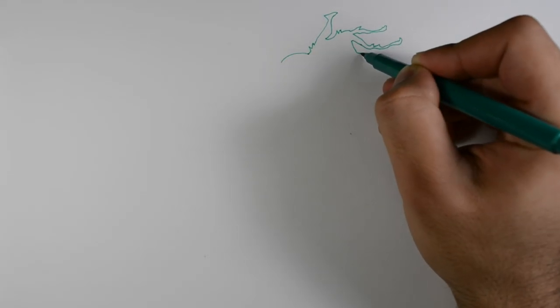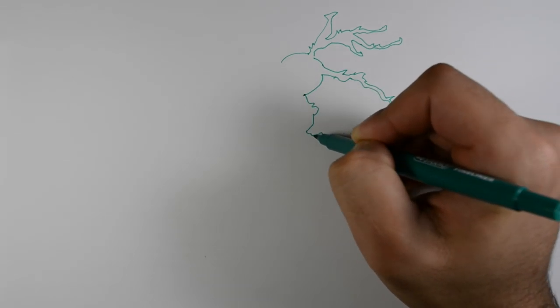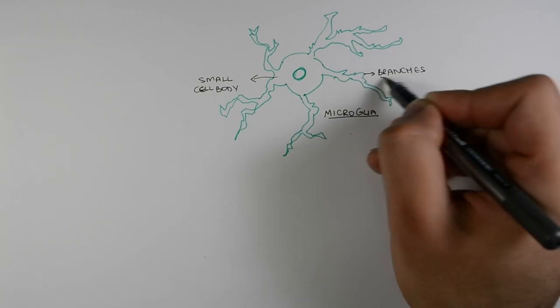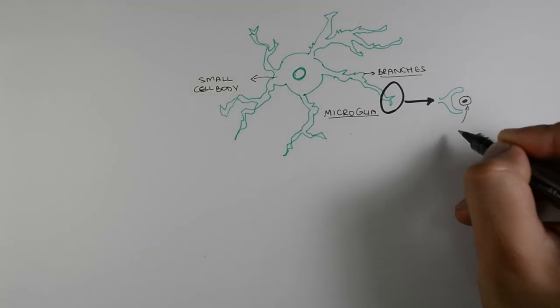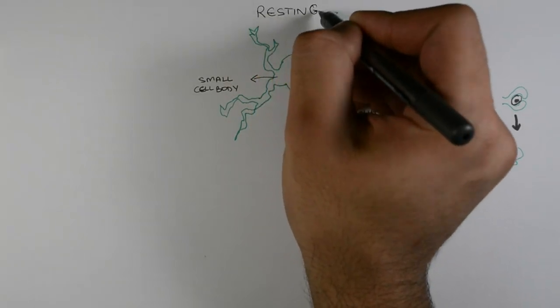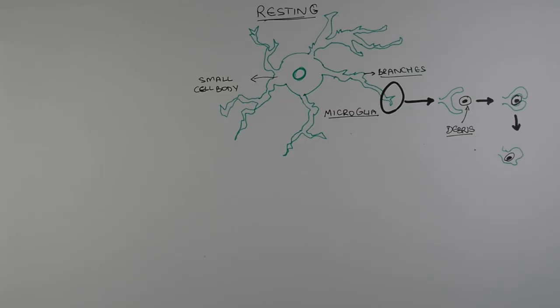Another type of cells known as microglia are immune cells of our nervous system. Normally, these cells protect the brain from infections by engulfing foreign particles or dead cells. In a healthy nervous system, microglia are in a resting state and have a small cell body and small processes which branch out of the cell.